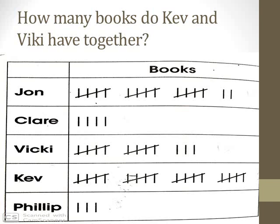The third question is: how many books do Kevin and Vicky have together? Together means you count Vicky's books and Kevin's books and add them. Vicky's books: five, ten, thirteen. Kevin's books: five, ten, fifteen, twenty. Twenty for Kevin and thirteen for Vicky — twenty plus thirteen equals thirty-three. Kevin and Vicky have thirty-three books altogether.